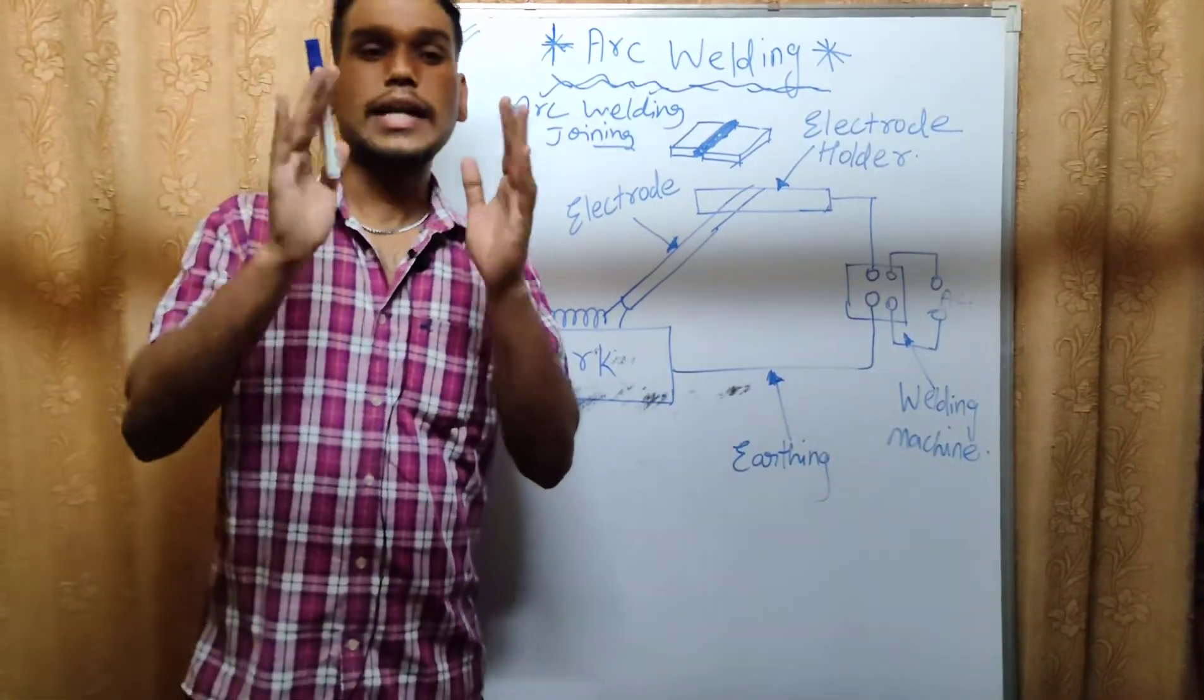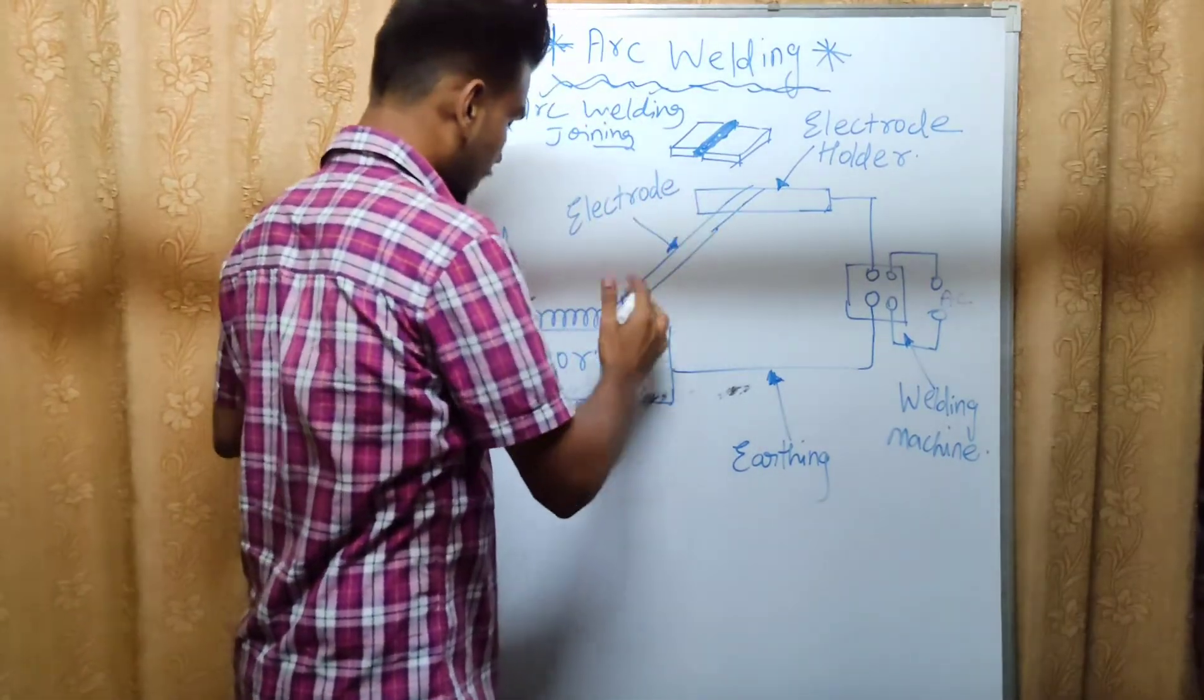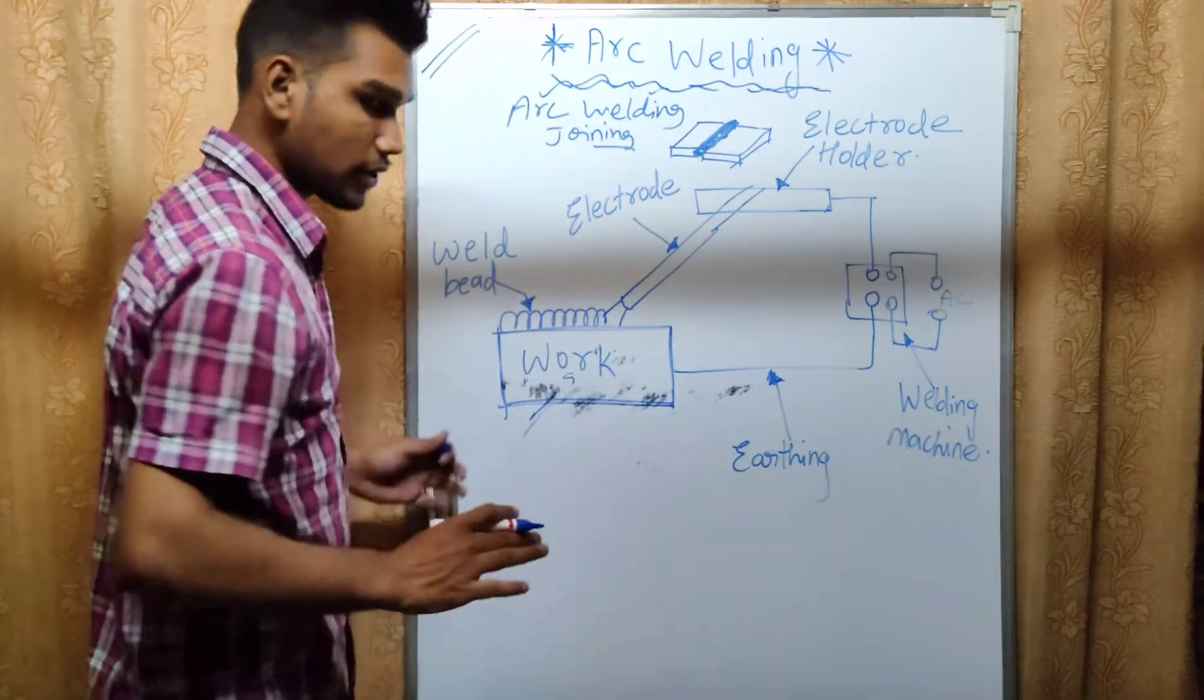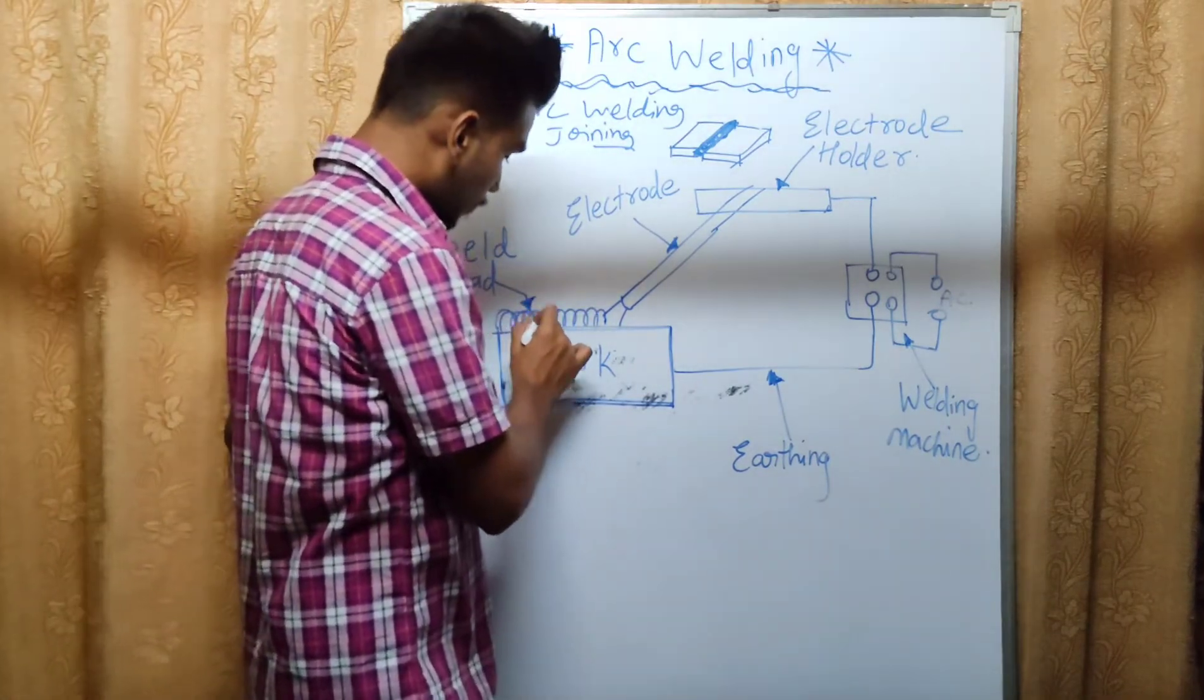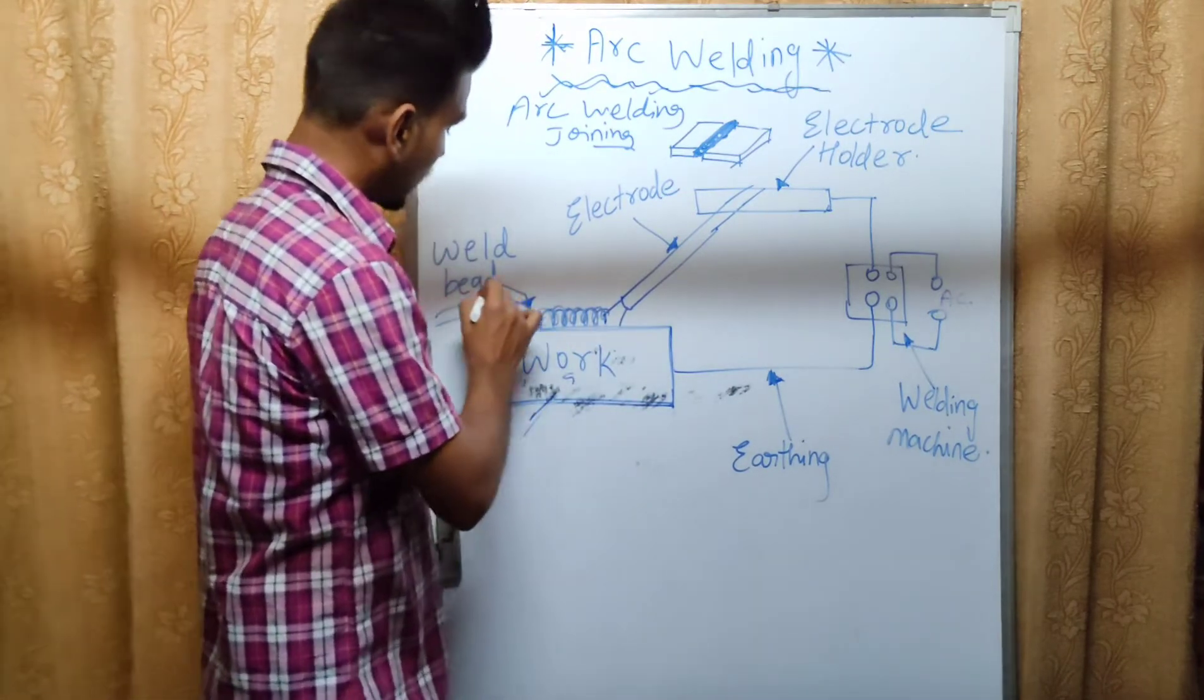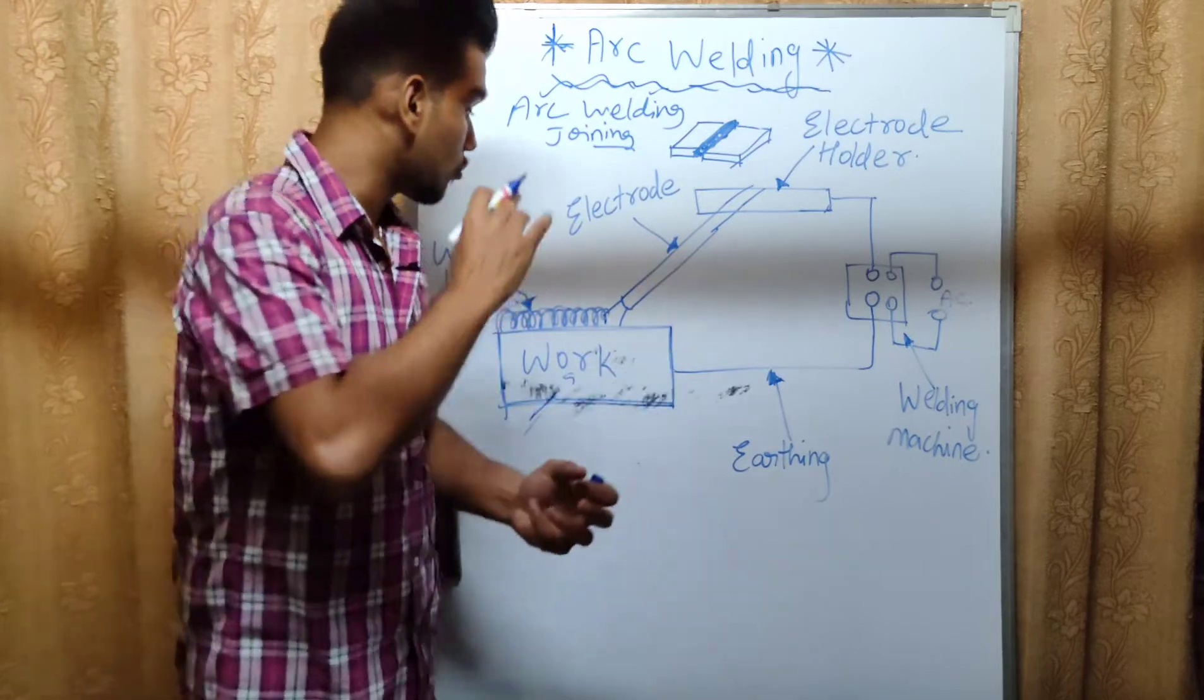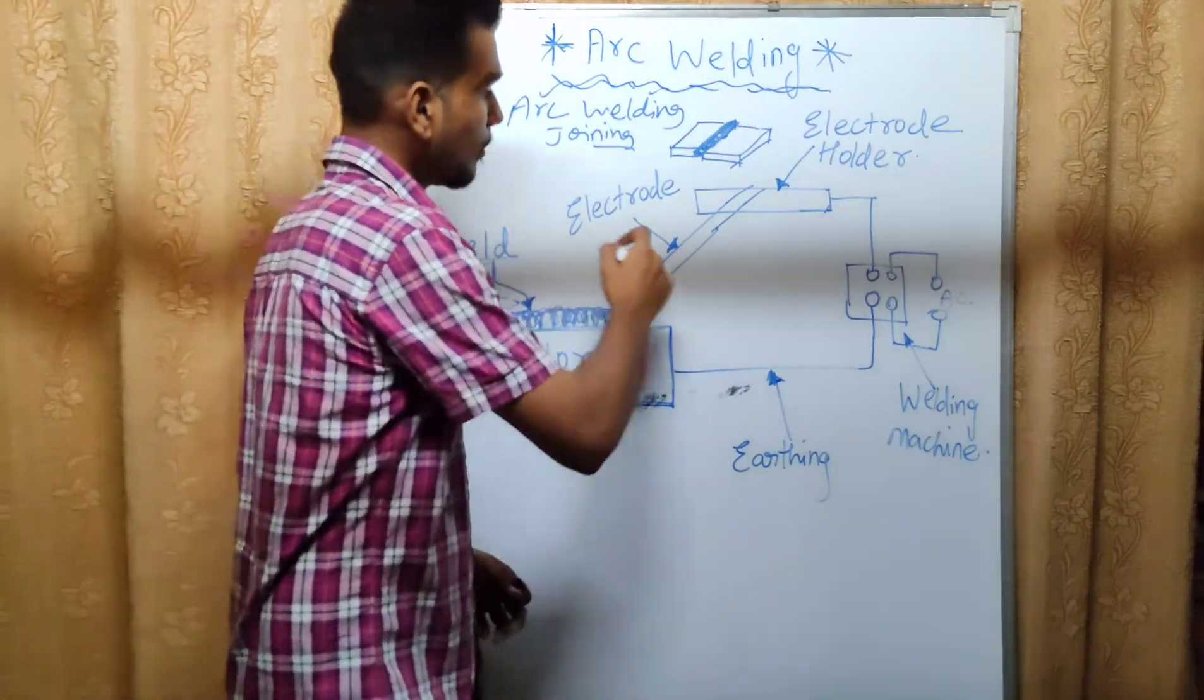The most important is arc welding. We will understand the diagram. We will talk about the workpiece here. This is the workpiece where we will work. We will have welding beads here. A weld bead is the formation over the hole.